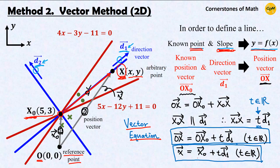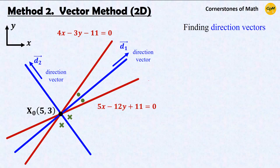The next step is to find the direction vector D1. The position vector x0 is given as (5, 3). However, we don't know this direction vector D1 yet. So how can we find direction vectors D1 or D2? We can find these direction vectors using the direction vectors of the two given lines and the angle bisector condition. These direction vectors, denoted as vectors A and B, can be determined from the slopes of the two lines.